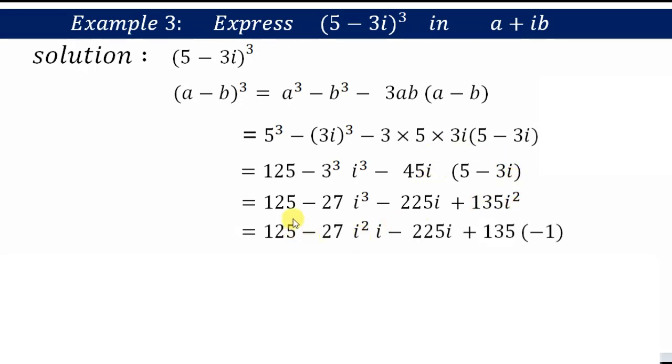So now 125 minus—as you can see there is i³ here, and as I told you we need the multiple of 2 to substitute the value of i. So let us split it in the multiple of 2. We can also write it as i²×i, isn't it? So minus 225i plus 135i²—what is i²? i² is -1.